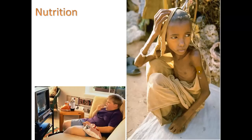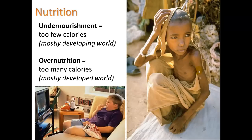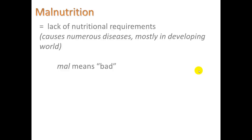We're going to take a look at some nutrition terms you need to know. First is undernourishment, meaning you're getting too few calories, and this is mostly in the developing world. Here we can see a young boy suffering from that. On the bottom, we see a boy from Australia who experiences over-nutrition — too many calories. There's another term called malnutrition, where 'mal' means bad. It's a lack of nutritional requirements — you're getting food, but you're not getting the right food — and it can cause numerous diseases, mostly in the developing world.